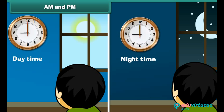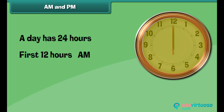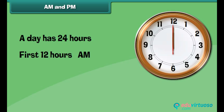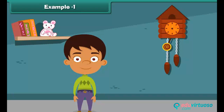One is daytime and the other is nighttime. How will you tell which is morning nine o'clock or evening nine o'clock? A clock has twelve numbers marked, and a day has twenty-four hours. The time for the first twelve hours from midnight to noon is written with AM. The time for the next twelve hours from noon to midnight is written with PM.